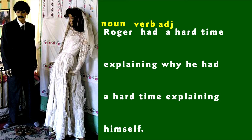But what is the noun here? Time? No, because I don't think he had a time. He had a hard time explaining. 'Explaining' is a participle acting as a noun. 'Time' is a noun acting like an adjective to modify 'explaining.' And 'hard' is most often an adverb, as in 'I work hard to correct all of your errors,' but in this case it is acting as an adjective to modify 'time.' So the adverb is acting as an adjective modifying a noun that is acting as an adjective to modify a participle that is acting as a noun.